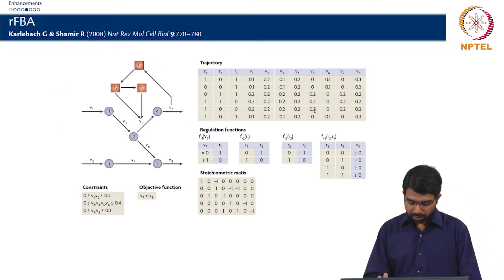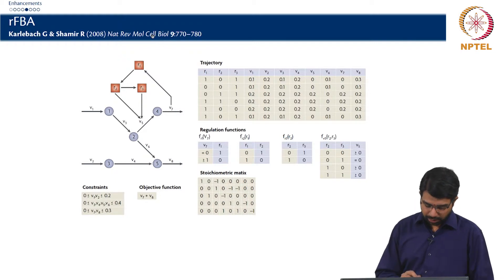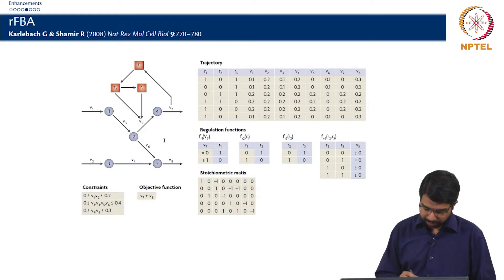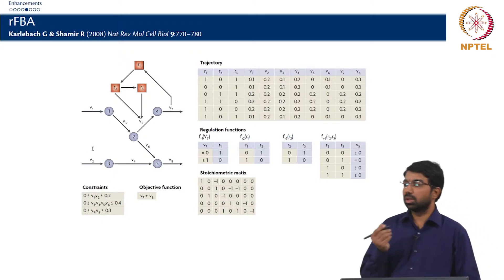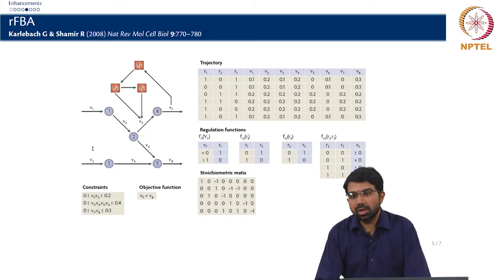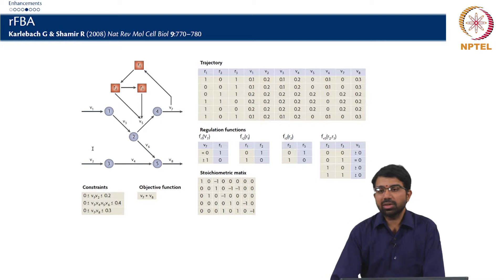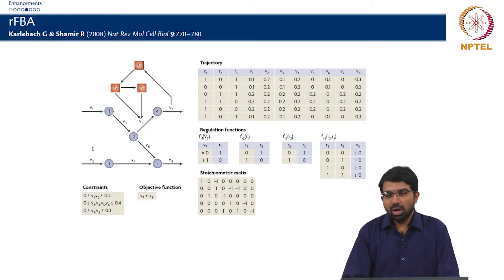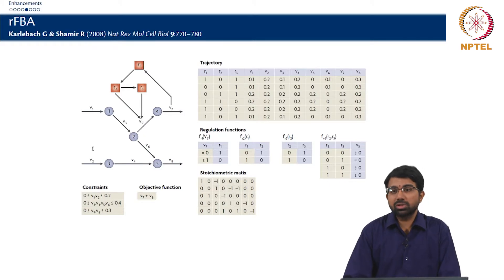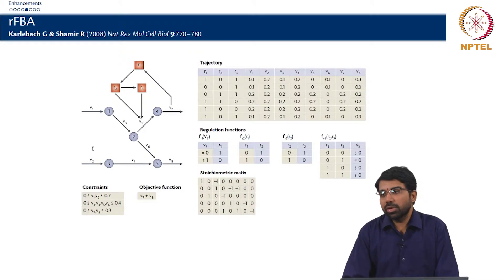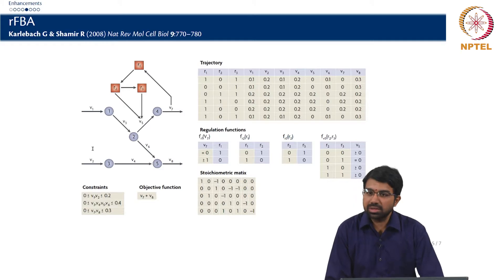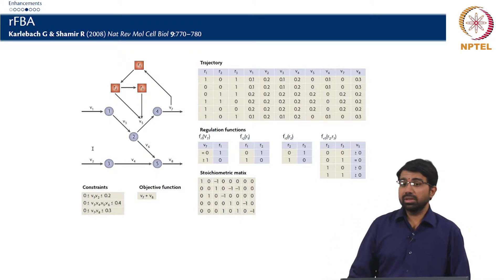Let us look at a simple example from a paper in Nature Reviews Molecular Cell Biology. The system has metabolites (represented as circles) and reactions, along with regulatory proteins R1, R2, and R3. You assume an initial condition, simulate the system, and get a particular flux distribution — values for V1 through V8. Once you have those values, you can plug them into your regulatory functions. The players in this regulatory network are fluxes, metabolites, enzymes, repressors, and allosteric effectors.